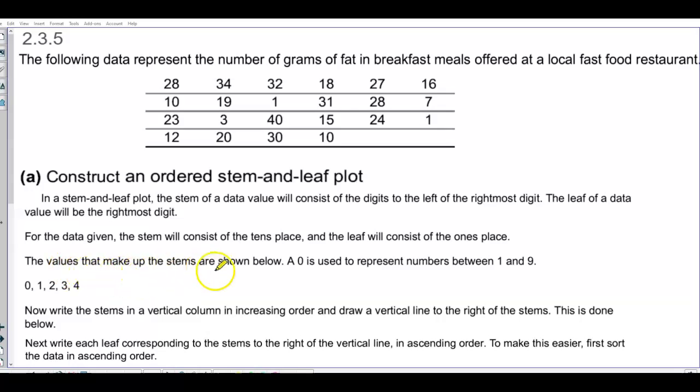So the values that make up the stems are shown below. If we look at the tens place, we have a 2, a 1, a 2, a 1, a 3, 1, 0, 2, 3, 0, 4, 3, 1, 3, 1, 1, 2, 2, 2, 1, 0, 0. So that's how we're getting the tens place to be 0, 1, 2, 3, and 4, because we're looking at the tens place.